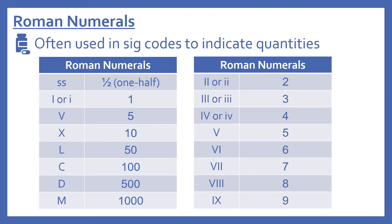Now we'll look at Roman numerals. Roman numerals are often used in SIG codes to indicate quantities. SS means one half. I (or lowercase i) means one, V means five, X means ten, L means fifty, C means one hundred, D means five hundred, and M means one thousand. You'll usually see the lower numbers used in prescriptions.